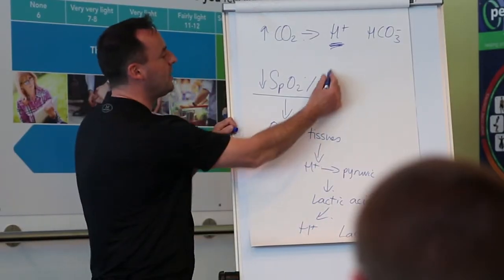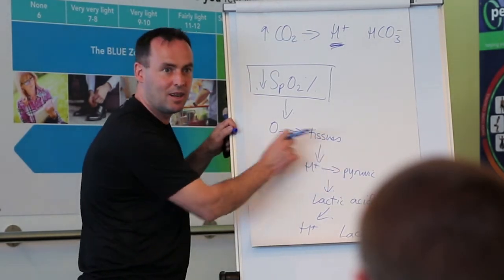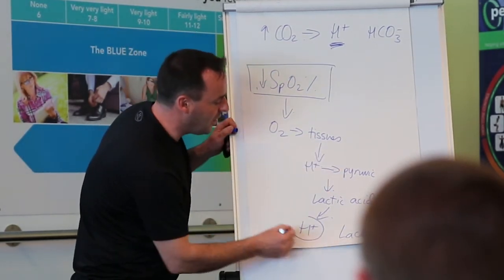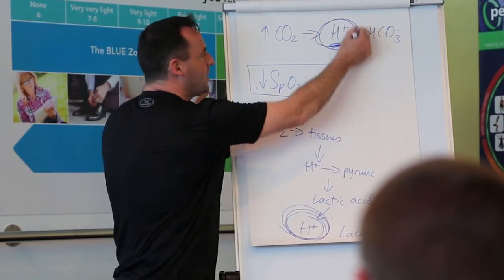We're dropping the SpO2. We're getting a buildup of hydrogen ion here, which is not getting oxidized. So we're getting a hydrogen ion from this effect here, and we're getting a hydrogen ion from this effect here.